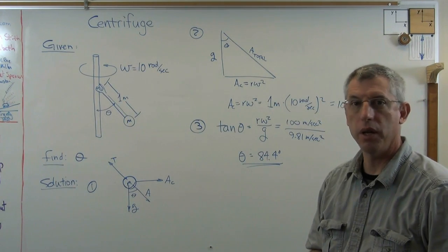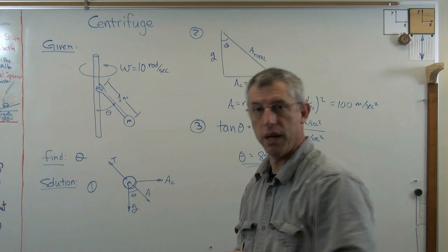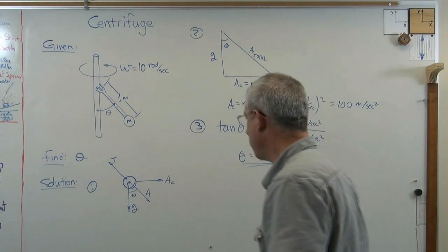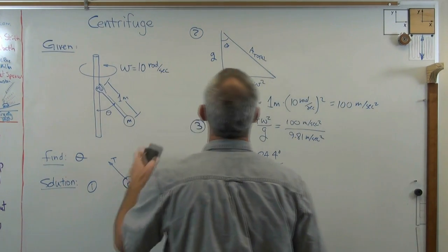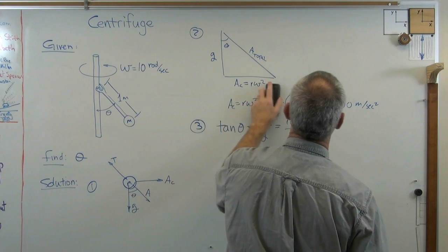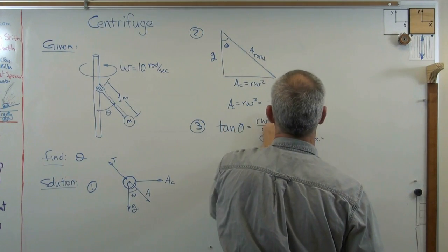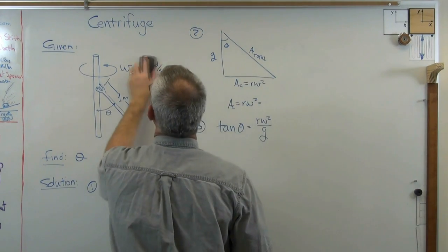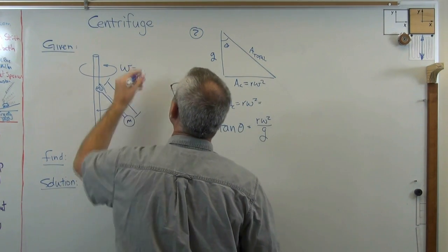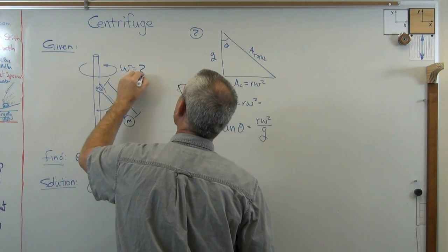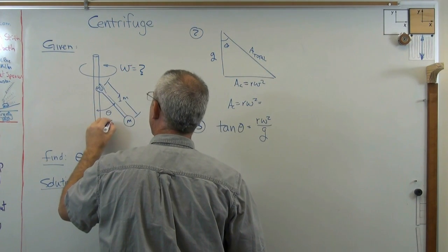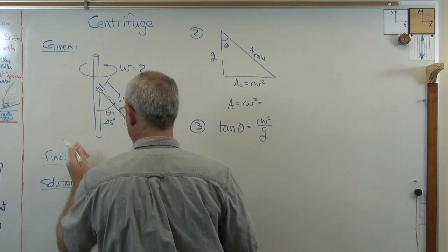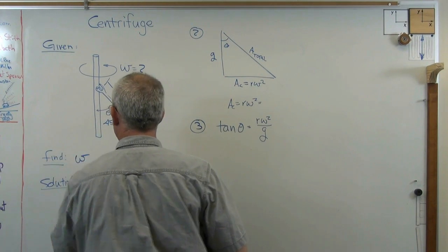Let's change the problem a little bit. What if I knew theta and I wanted to find omega? Well, let me change this. This doesn't change. This doesn't change. That does. That doesn't. Okay. Let's say that I don't know what this is. That's 45 degrees. And we're going to find omega. All right.